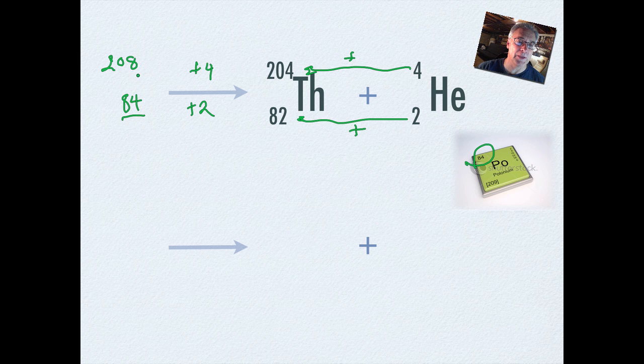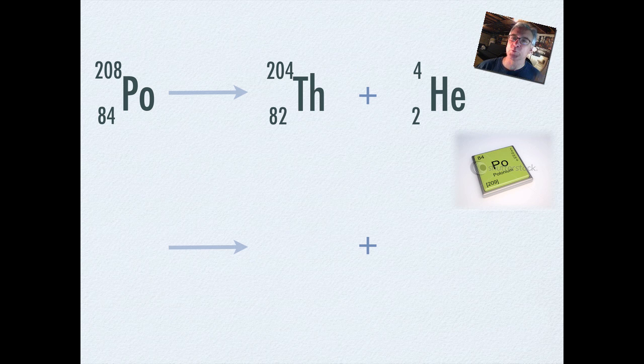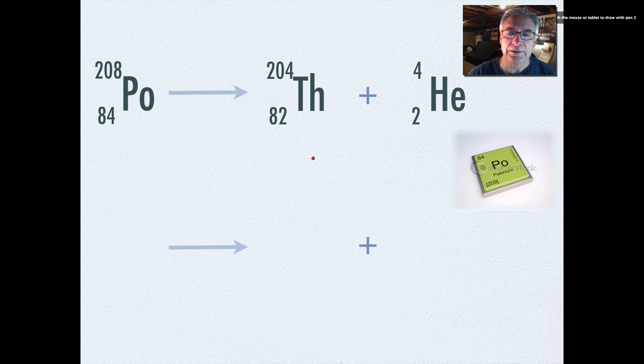So polonium would be Po. So that would be polonium. And because of that, we went in this direction. That would be a plus 2. And there we have it. Now there's some rules, and I'd like to go ahead and go over those with you very quickly.